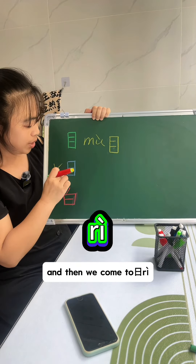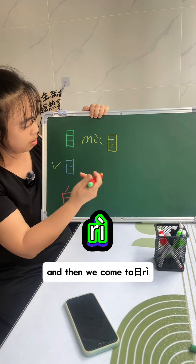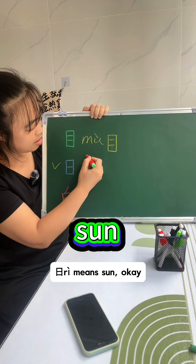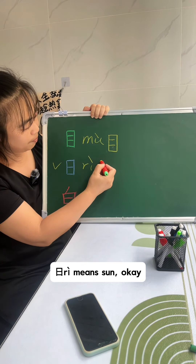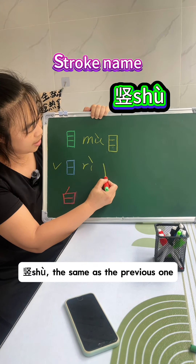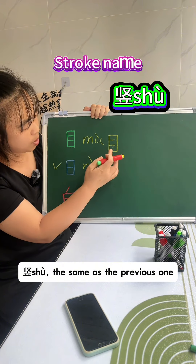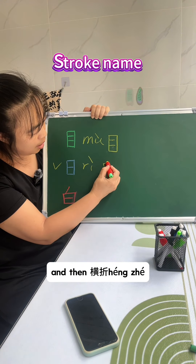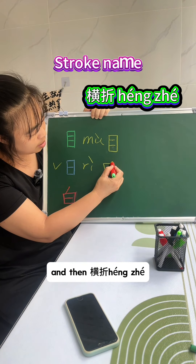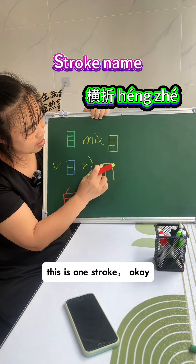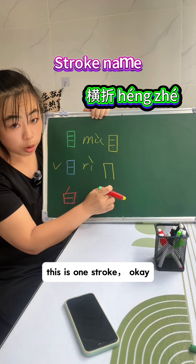And then we come to 日. 日 means sun. 竖 — the same as the previous one. And then 横, 折 — this is one stroke.